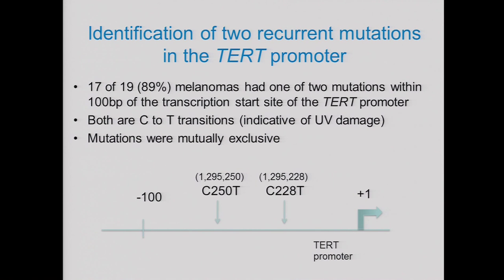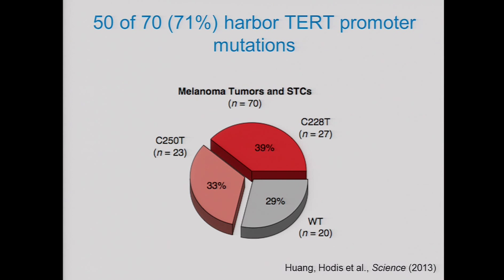These were both C-to-T transitions, which occur in the context of UV damage, and they were mutually exclusive. We had actually seen this event in an initial paper but didn't mention it because I was skeptical — I said there's no way there is a somatic mutation happening at the same nucleotide at this frequency. It turned out to be a bit of a pain to validate because the region was GC-rich, and we finally resorted to old-fashioned Sanger sequencing, which worked. In a validation set, the numbers held up: one or the other of these mutations was present in 70% of melanomas.